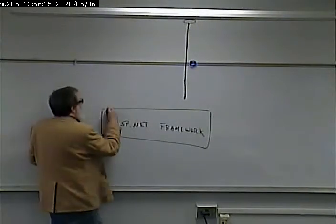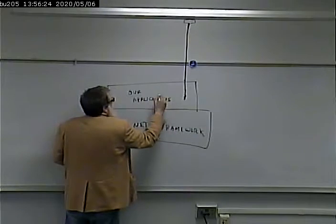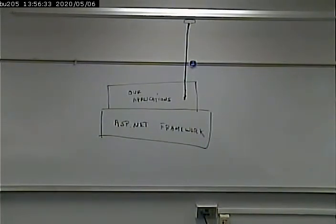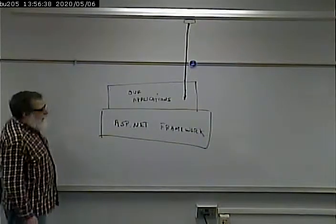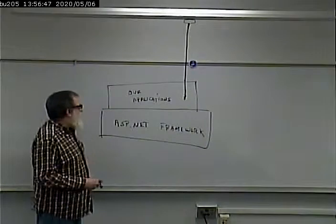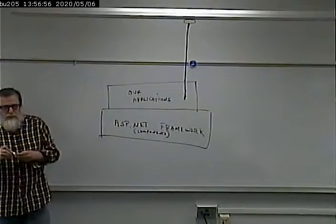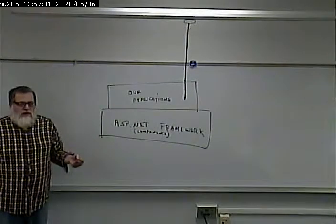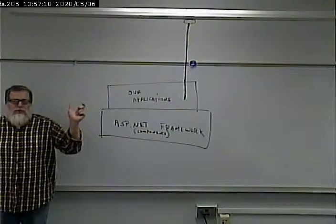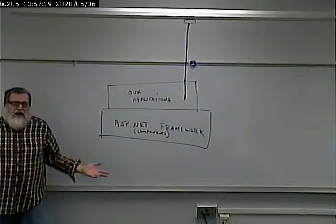So far we've been building upon that framework. Our applications sit on top of the ASP.NET framework and take advantage of the components contained within it. There's another way that we can use the framework to help us out, and that is by creating our own components. A framework is a series of components that we can plug together to create an application. We don't have to invent every single aspect of our application — we can use a pre-built component. For example, instead of writing our own JavaScript validation, we can use an ASP.NET validation control.